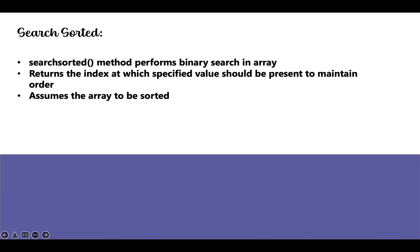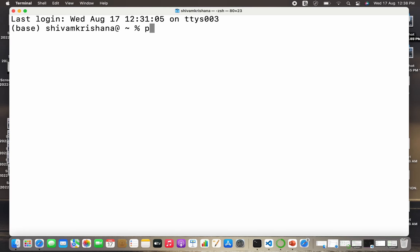The searchsorted method performs binary search in an array. It returns the index at which a specified value should be present in order to maintain sorted order. The important thing is it assumes the array to be sorted. So let's move on to the coding part.